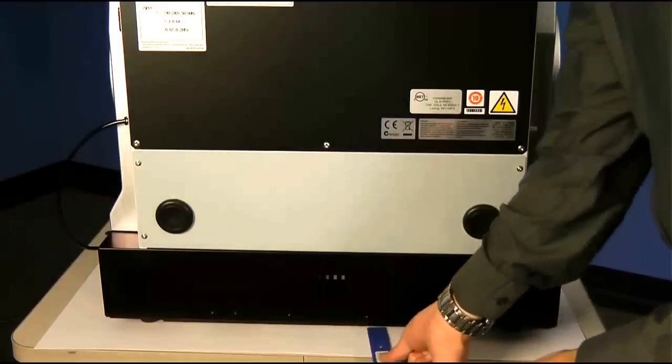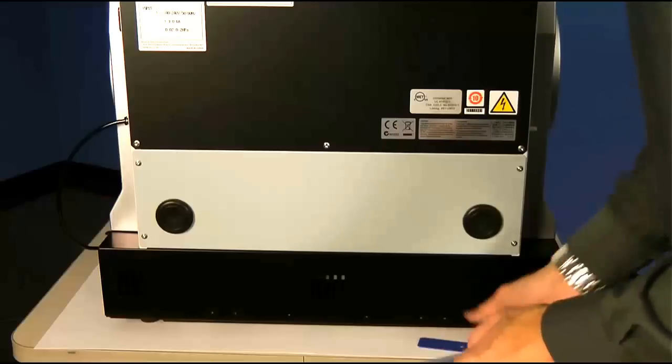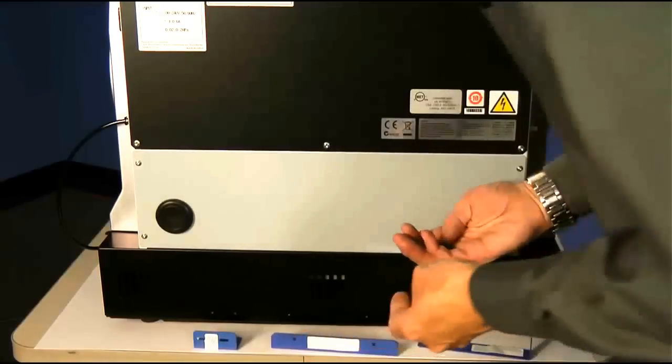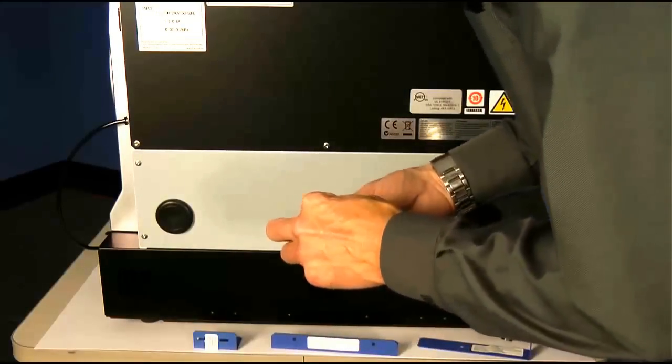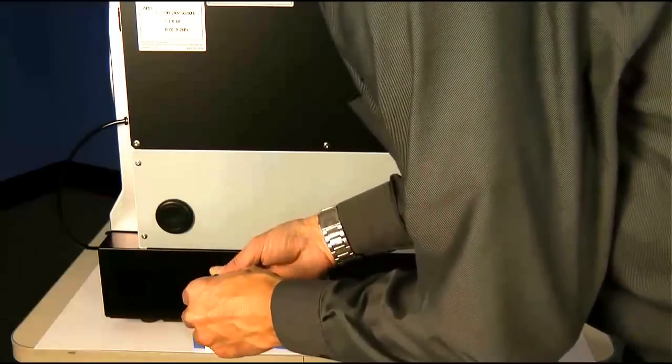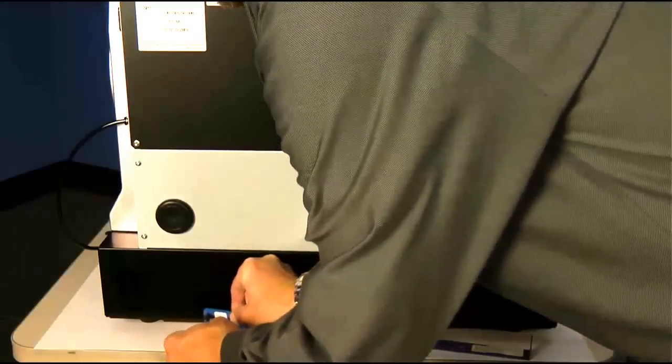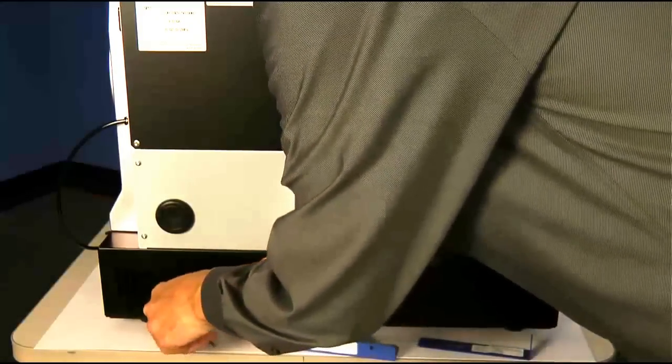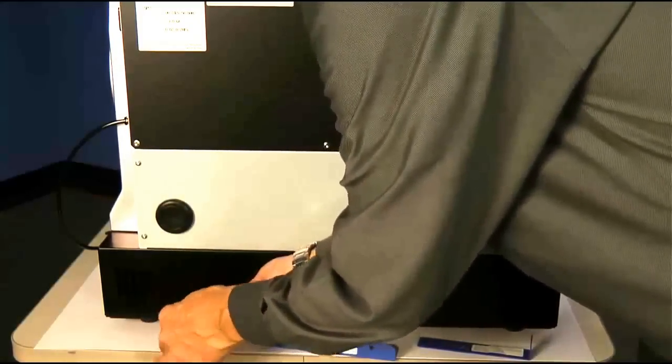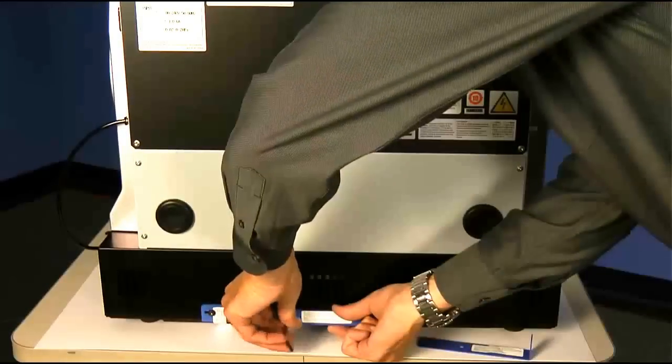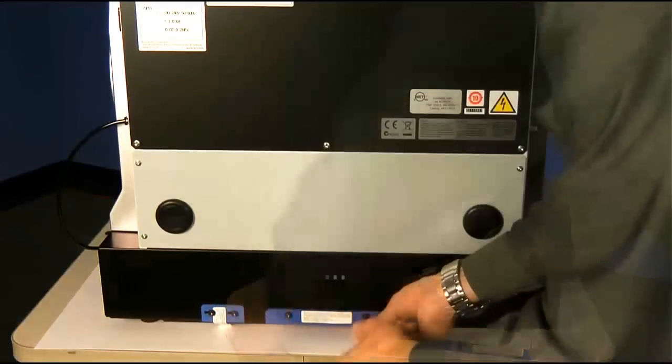It's very important not to misplace these shipping brackets. If you ever need to ship or move your unit to a new location, you will need to replace these into their original position holding the spindle and fixture in place. For easy storage, the lower rear panel of the DWX50 has three separate slots that you will find for easy installation and storage of the shipping brackets when not in use.